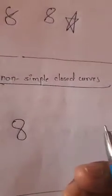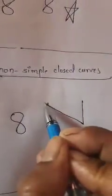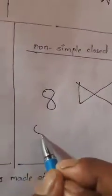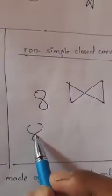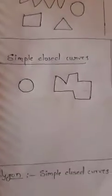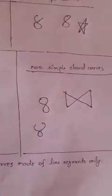In a non-simple closed curve, the starting point and end point are the same but the curve crosses itself. So it is not a simple closed curve. For example, the number 4 in Hindu-Arabic — the curve crosses itself, so it is not a simple curve. Simple closed curves are those curves which do not cross themselves.